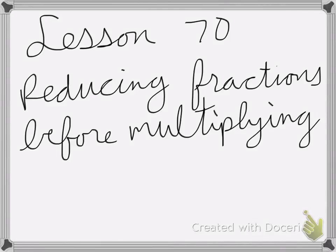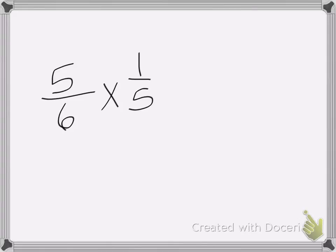Alright, so lesson 70 is on reducing fractions before multiplying. My first problem is 5/6 times 1/5.